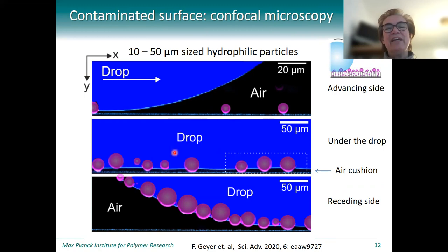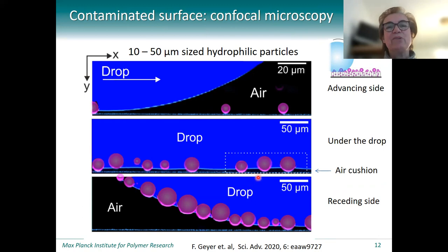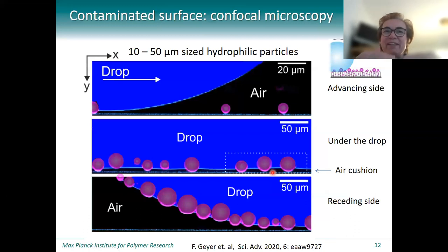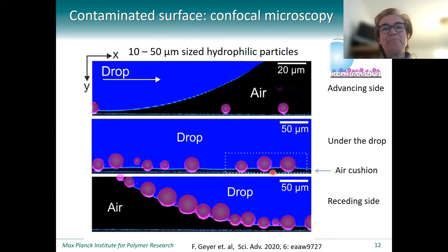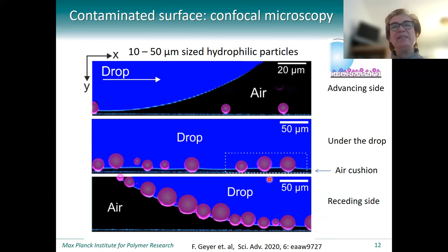The second image shows the droplet just resting on the particles underneath. Despite the fact that our particles were hydrophilic, we still observed an air cushion underneath. So the droplet still rests on some kind of air cushion, even with hydrophilic particles. The reason is that even on a hydrophilic particle, water takes a preferred contact angle — in this case close to 50 degrees — and therefore it takes energy to fully wet the particle.